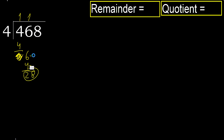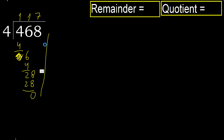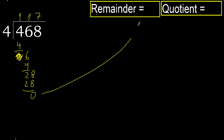Next, 28. 4 multiplied by 7 is 28, which is not greater. Ok, subtract. Next, there is no number, therefore finish.